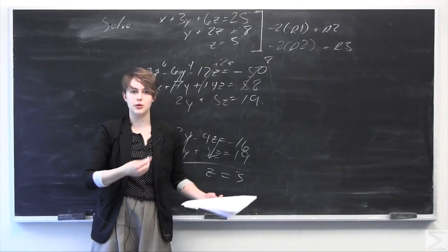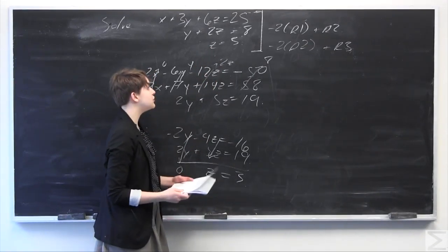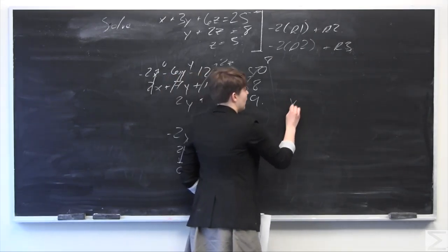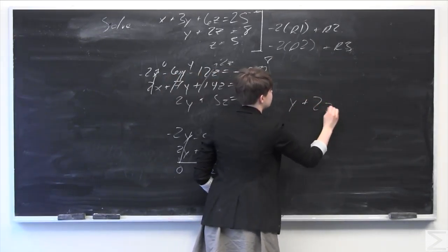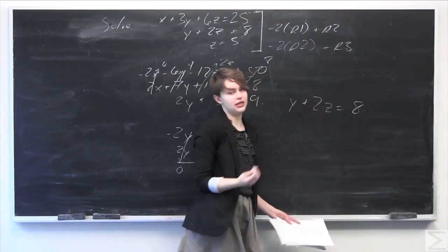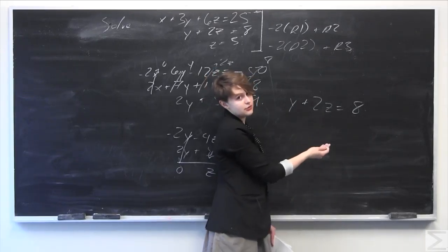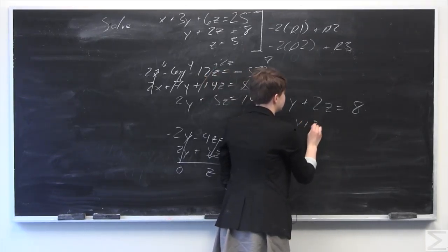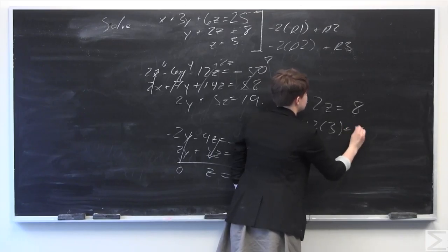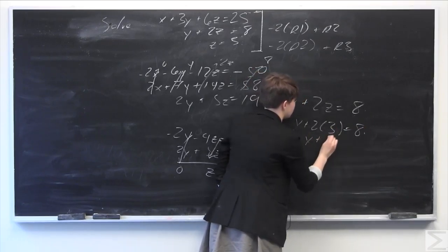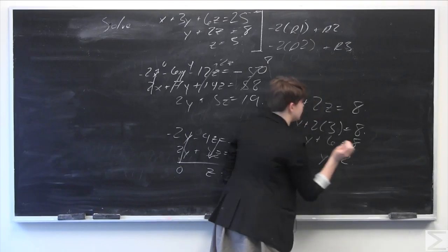We know z equals 3, and from the second equation, y plus 2z equals 8. Since z equals 3, we have y plus 2 times 3 equals 8. So y plus 6 equals 8, which means y equals 2.